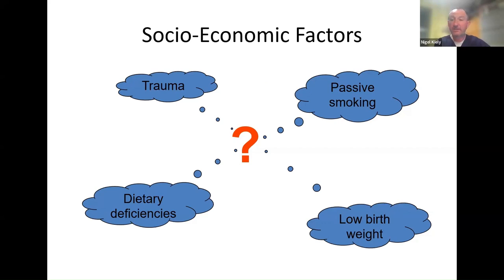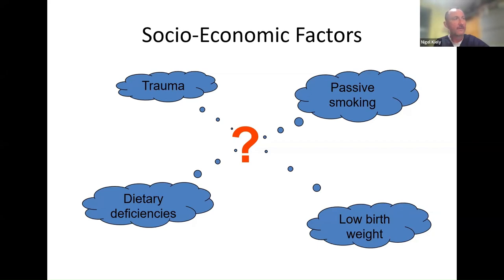There are quite a few different things to think about regarding what might cause Perthes disease. Is it diet? Multiple episodes of trauma? Passive smoking? Low birth weight? These are all hypotheses at the moment — we don't know — but they are associated factors. Smoking is bad for everything, and exposure to passive smoking during pregnancy is not thought to be good. There may also be nutritional deficiencies involved.